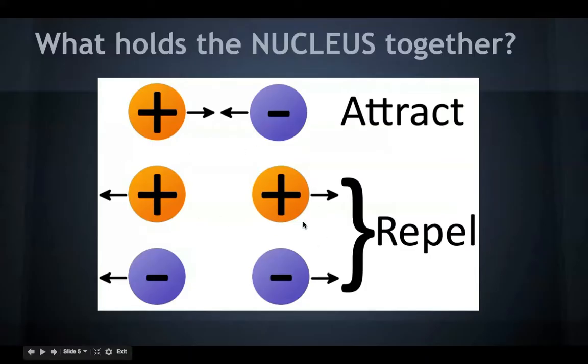Now the reason I'm showing this picture is because this second one, where there's two positives, represent what's going on in the nucleus, where there's a bunch of protons or a bunch of positive charges. Technically speaking, they shouldn't be all held together in the nucleus, because they have this similar charge they should be repelling. So what holds the nucleus together?